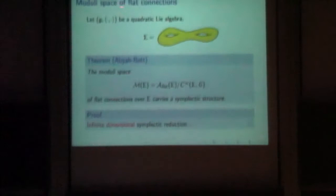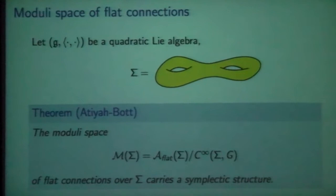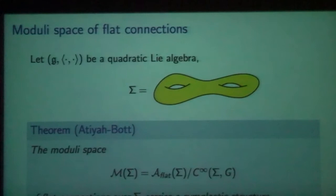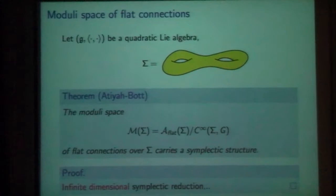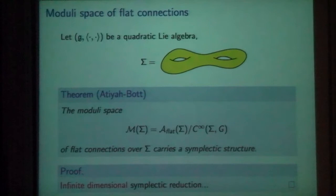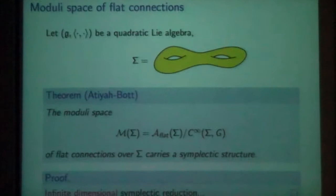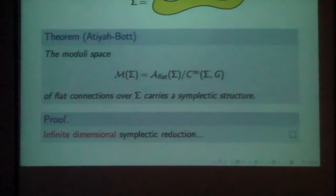When we talk about the moduli space of flat connections, we usually pick a quadratic Lie algebra — that's a Lie algebra with a non-degenerate symmetric invariant bilinear form. Then we take a surface and we have a principal bundle over that surface. This structure has the algebra and preserves the inner product. If you look at the space of flat connections on that principal bundle, it carries a symplectic form. But we also have symmetries — along each fiber, we can act by the structure group.